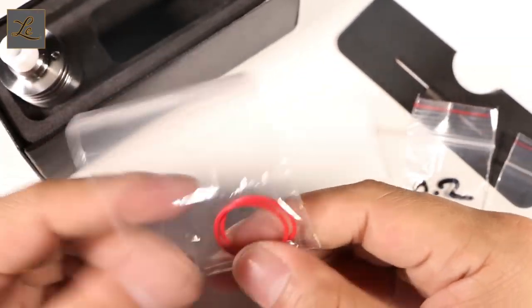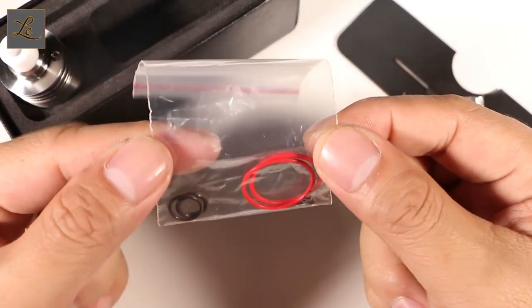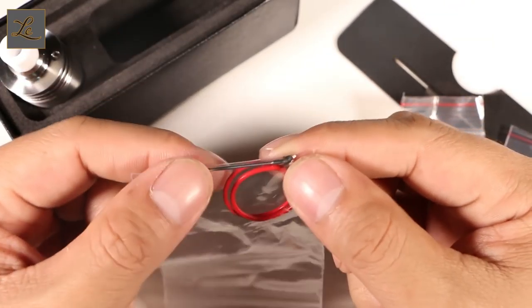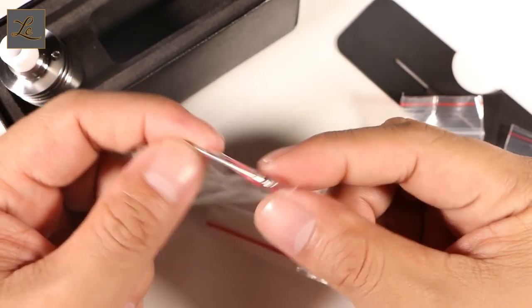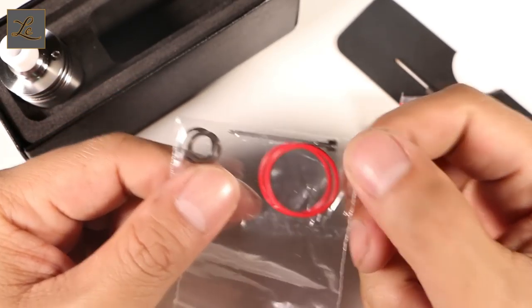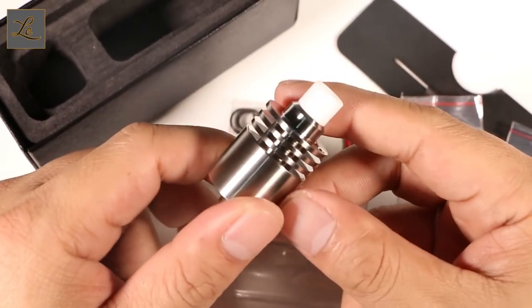It does come with a bag of spares as well. As you can see, it's a bag of O-rings and a spare 5.0 positive post just in case you break yours. Last but not least, the Enex Mark 3 itself.